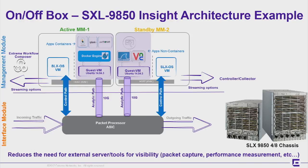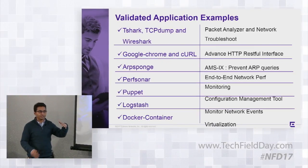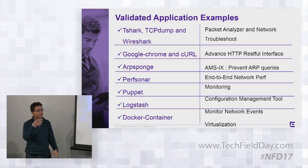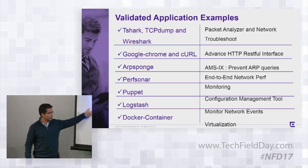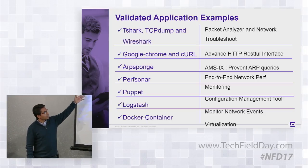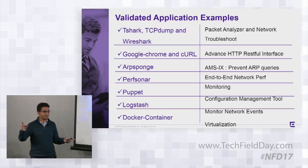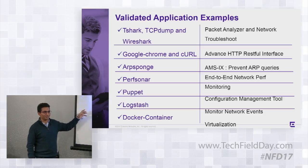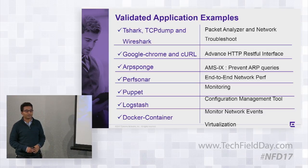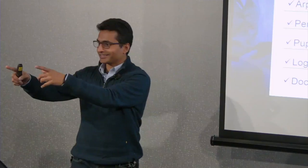Here is the list of applications we tested and validated. We have Docker running on the guest VM, spinning up multiple containers hosting perfSONAR for performance testing. We also support Puppet, logstash, perfSONAR — which is very useful for performance testing — arpwatch, which is useful if there's an ARP attack, Google Chrome (so within the guest VM you can open your mail and attach a PCAP file and send it anywhere), and Wireshark and tshark command line are all part of the package.